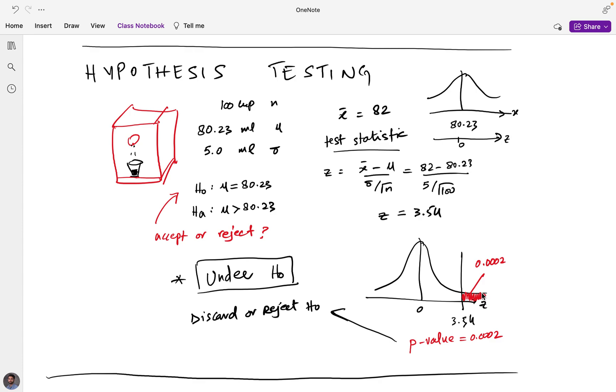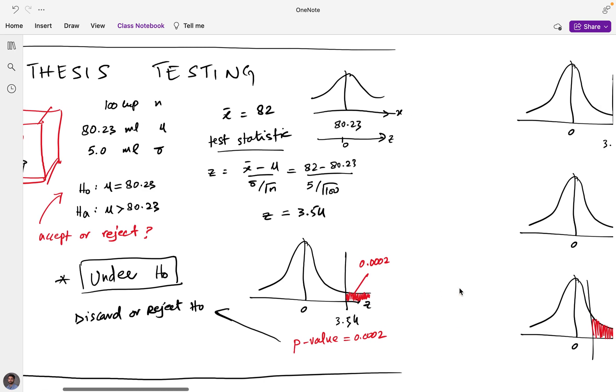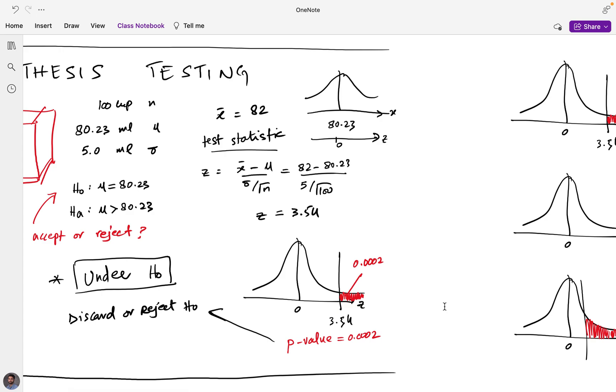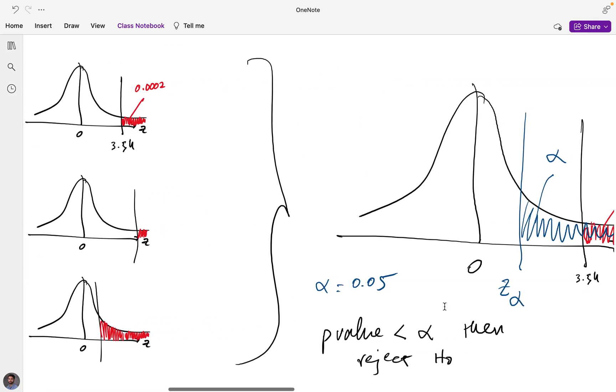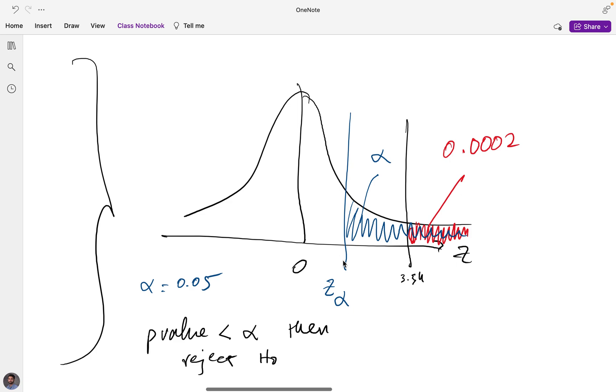Well, then the conversation steered towards how low is low enough. Is 0.0002 low enough? And then we said we could define a threshold value, a test significance or an alpha value of 0.05, which is five percent. And if our p-value is less than this alpha, we could reject the null hypothesis. So we defined a rule for rejecting the null hypothesis.